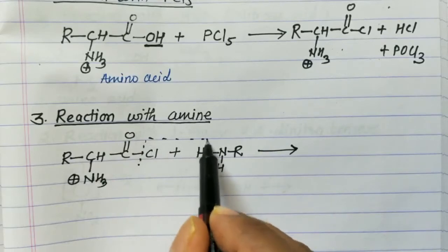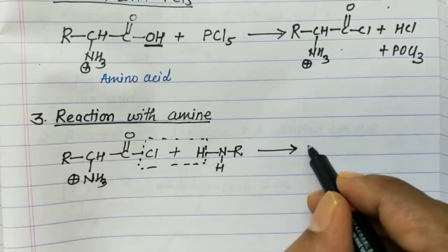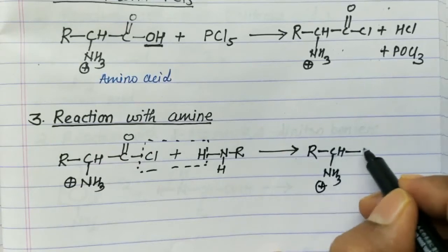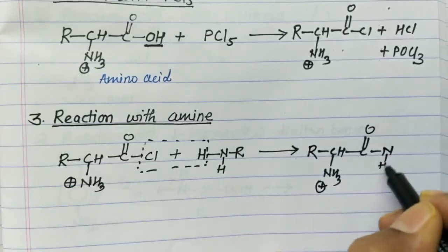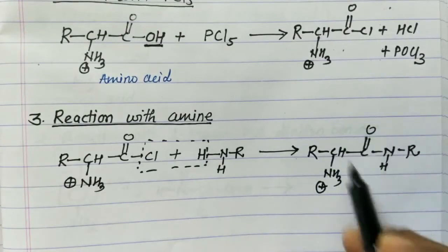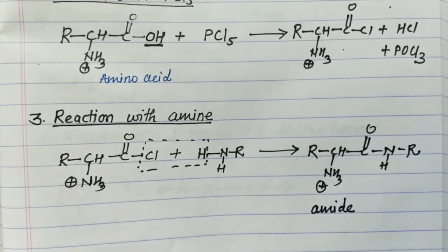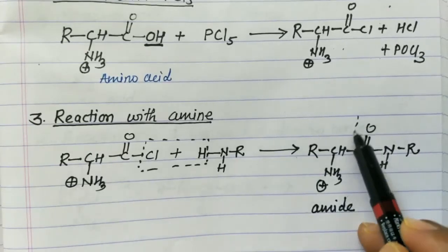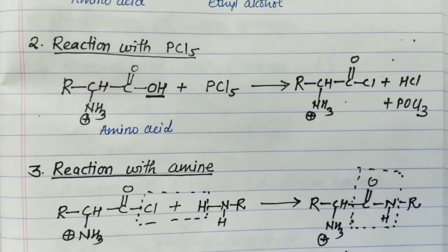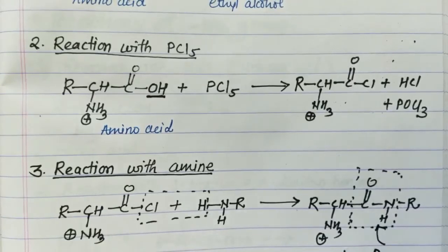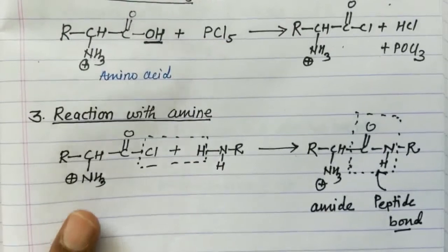The product of reaction of acyl halide with amine is R-CO-NH-R, containing the C-O-N-H bond — an amide bond — giving the corresponding amide of the respective amino acid. Such C-O-N-H bonds formed during protein formation are called peptide bonds. Remember: this is called a peptide bond.